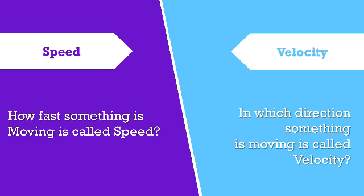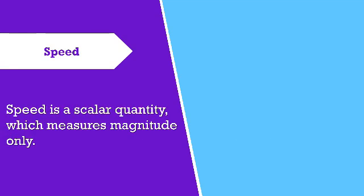Speed is a scalar quantity which measures magnitude only. As against this, velocity is a vector quantity which measures both magnitude and direction.